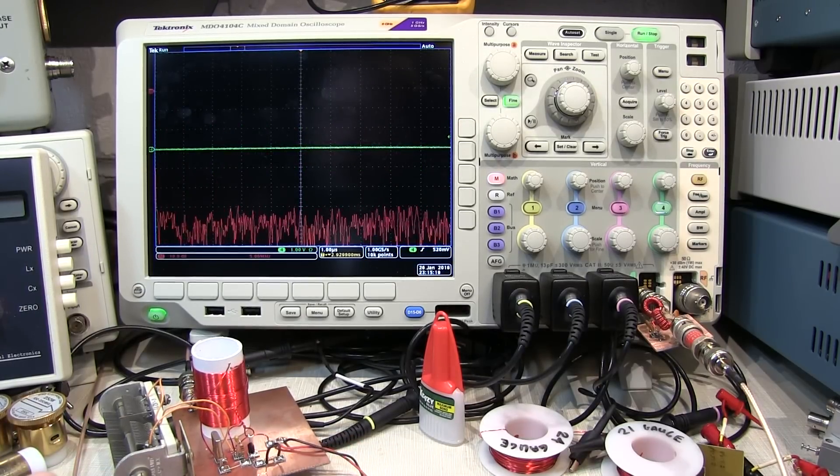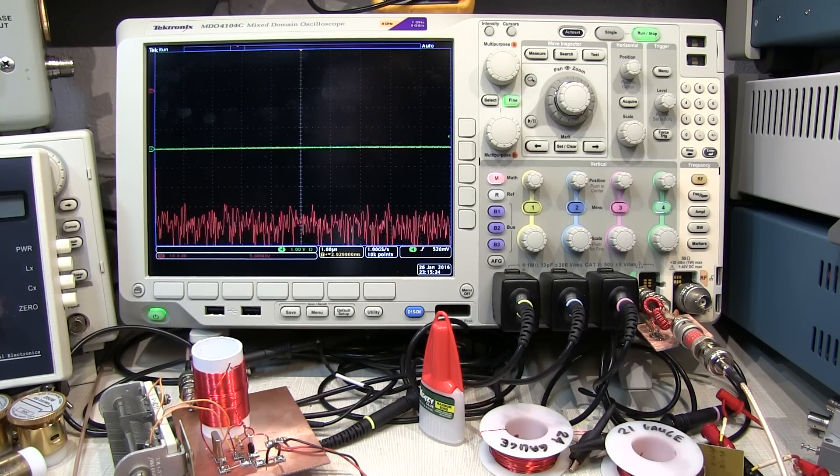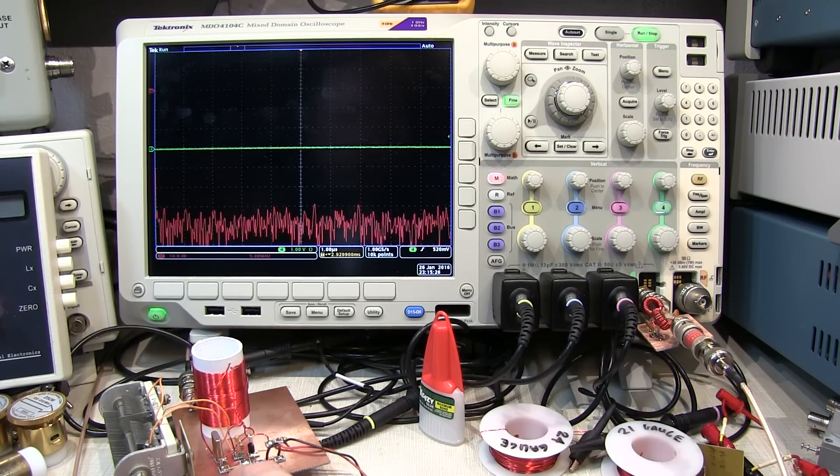I hope you enjoyed this look at the Michigan MightyMite transmitter and how a simple low-pass filter can really clean up the harmonic distortion that it creates.